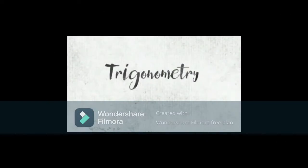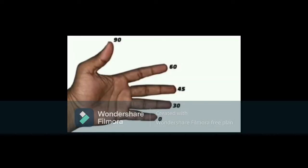Memorizing trigonometric values has always been a nightmare to many of us. Here we're going to show you a simple trick to memorize the values using your fingers. So for that, take your left hand, let the little finger represent 0 degree, the ring finger represent 30 degree, the middle finger represent 45 degree, the index finger represent 60 degree and the thumb represent 90 degree.